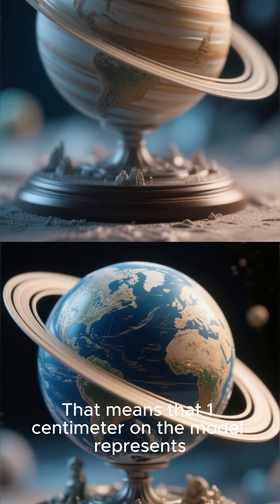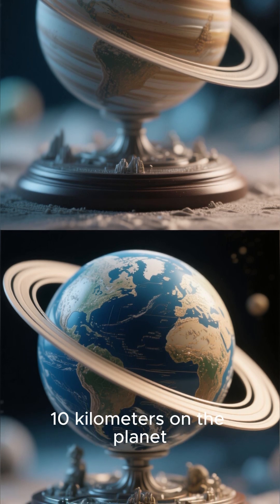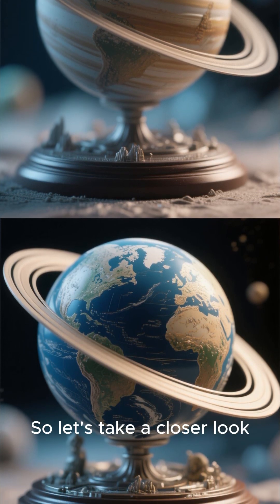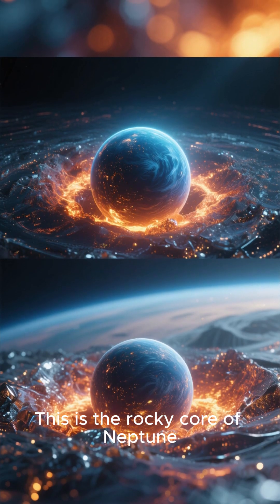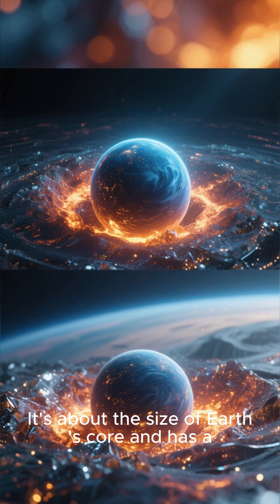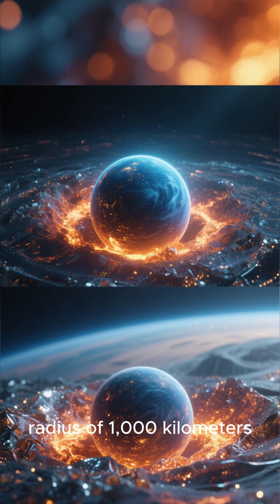That means that 1 centimeter on the model represents 10 kilometers on the planet. So let's take a closer look. This is the rocky core of Neptune. It's about the size of Earth's core and has a radius of 1,000 kilometers.